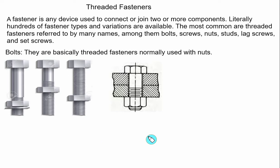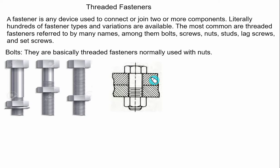A fastener is any device used to connect two or more components. For example, we have two members — member 1 and member 2 — and a hole is made through them. The bolt is passed through; the hexagonal part is called the head and the other side is called the nut. When the bolt is inserted into the two mating parts, the nut is introduced on the other side, and the joint is formed by tightening the nut from the end opposite to the head of the bolt.